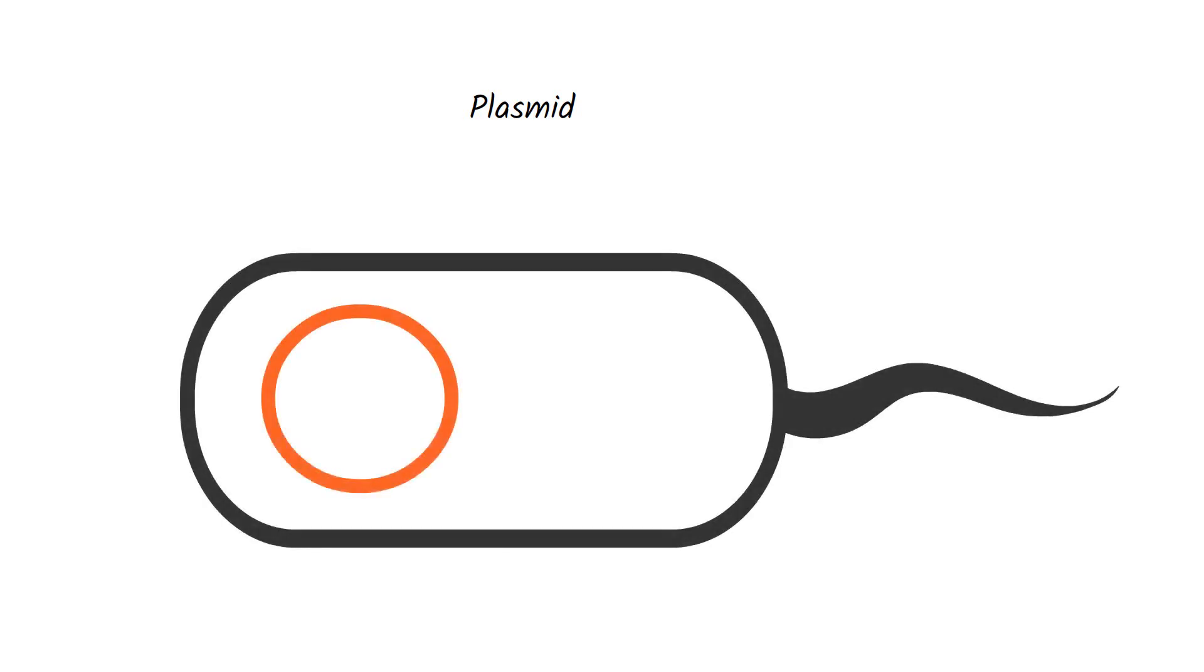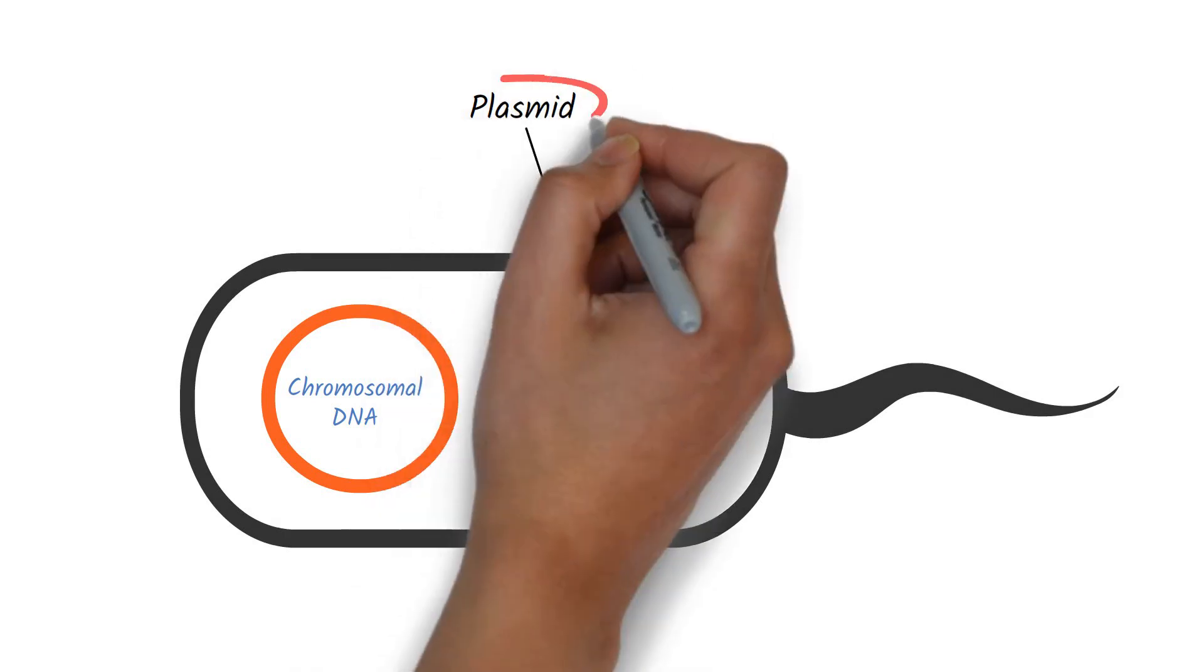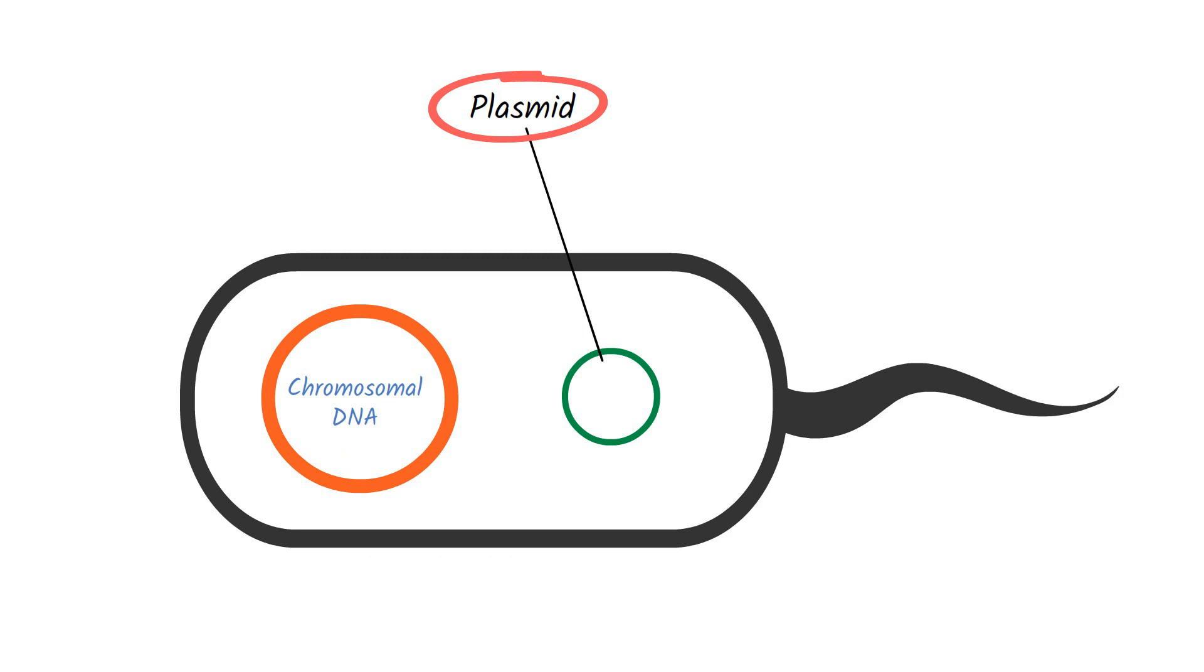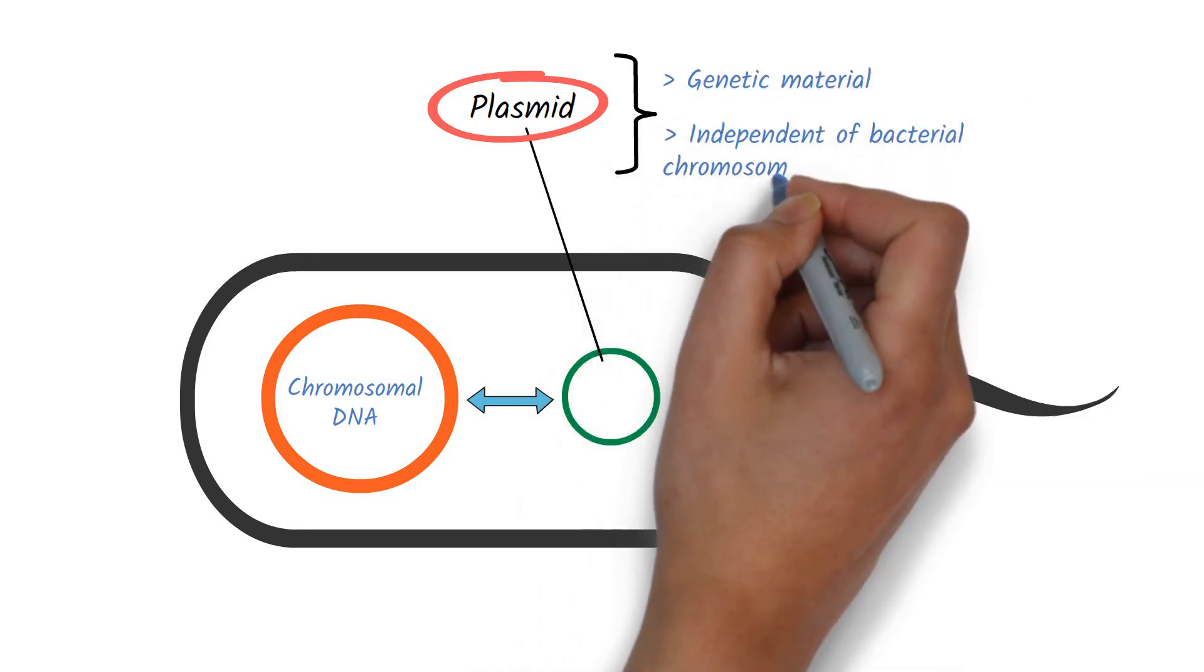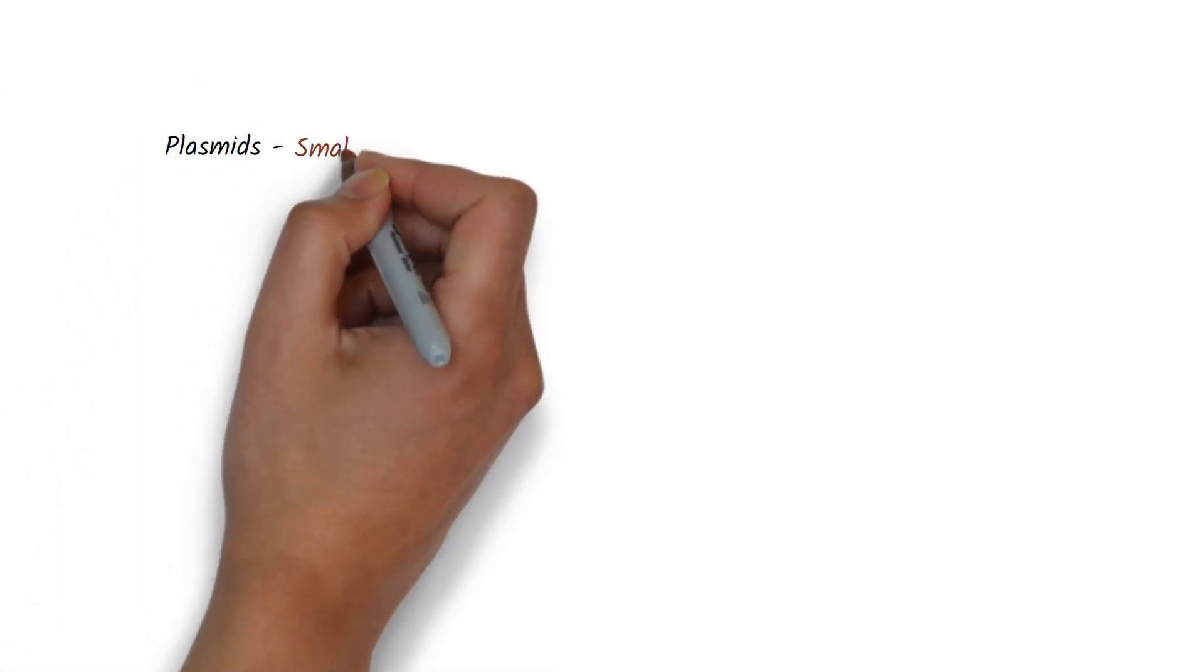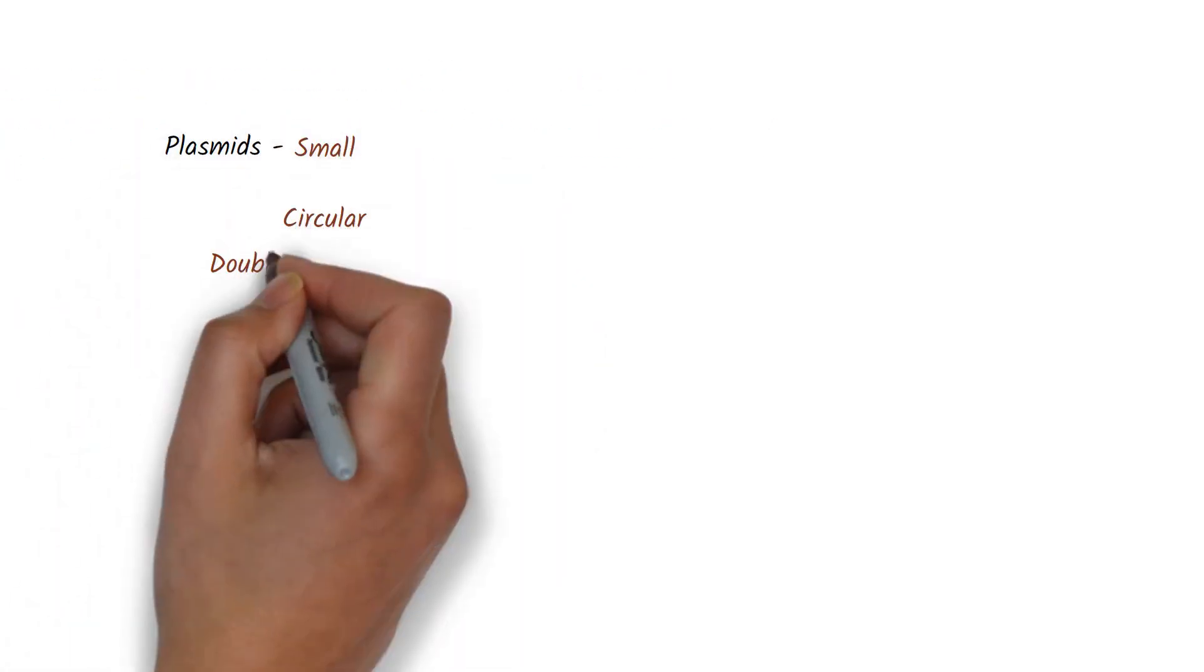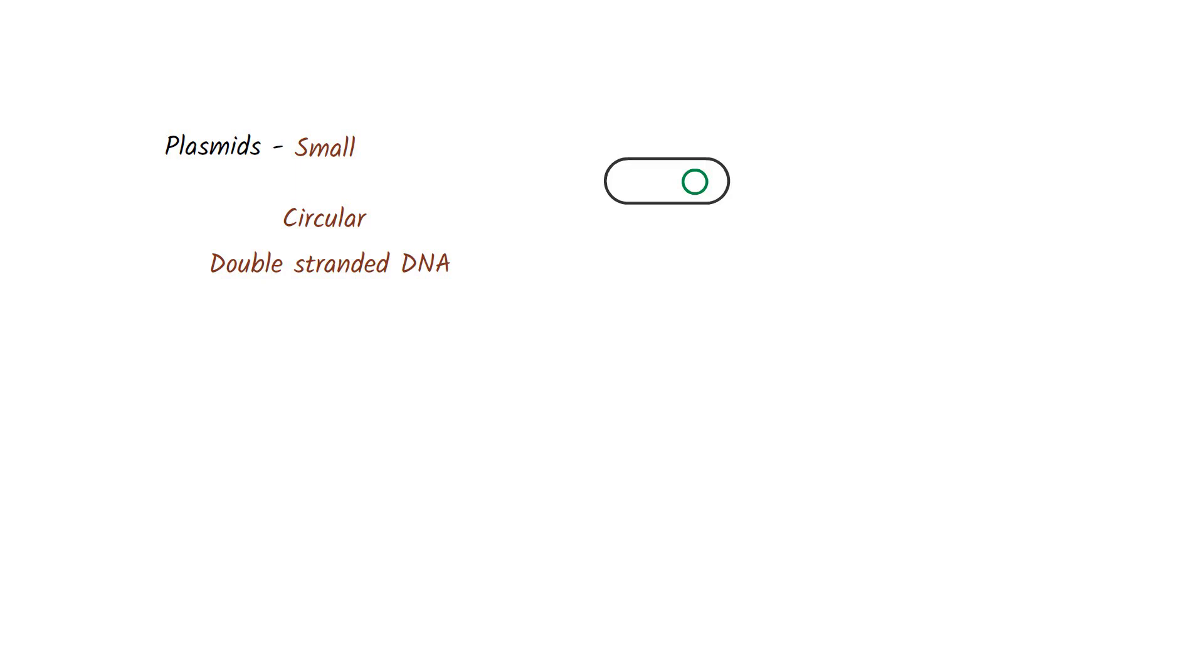In a bacterial cell, apart from the chromosomal DNA there is an extra-chromosomal material. This extra-chromosomal material is called a plasmid. Plasmids are physically separate from bacterial chromosome. In other words, plasmids are the genetic material that are independent of bacterial chromosome.